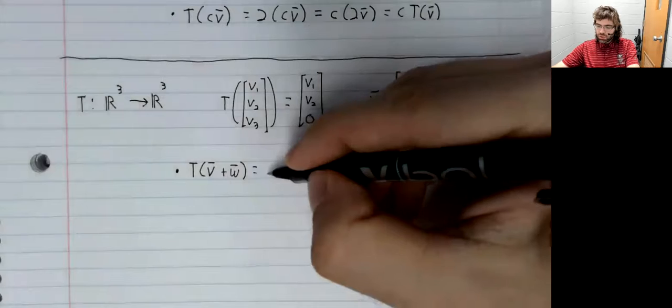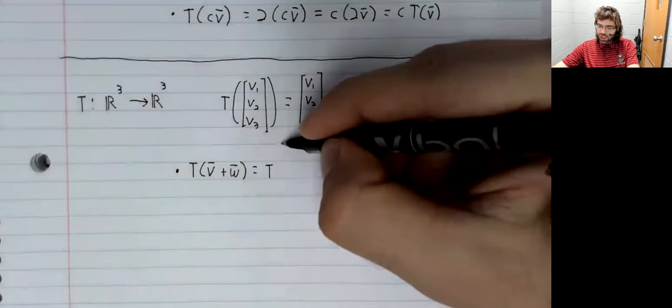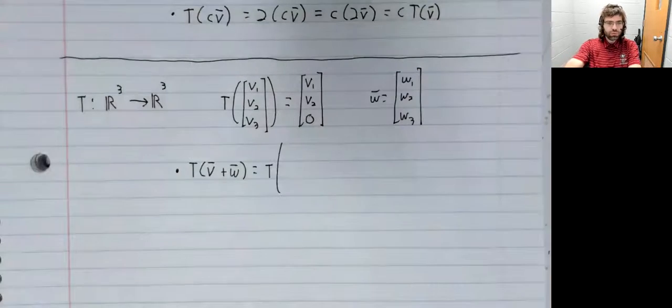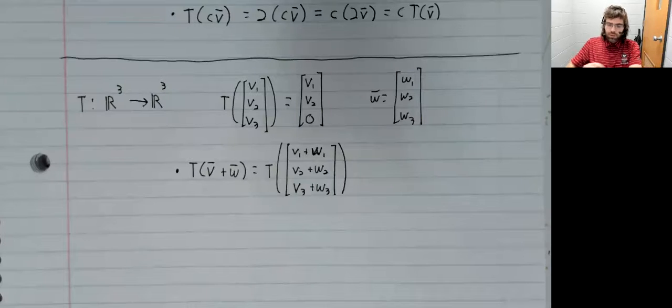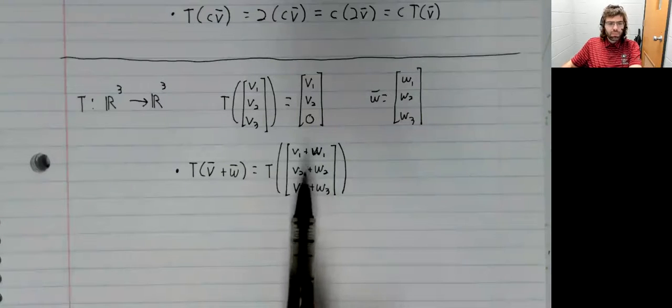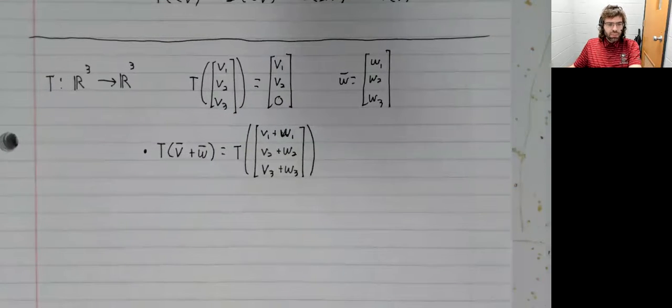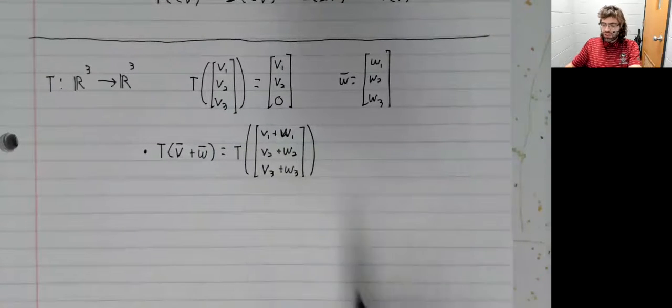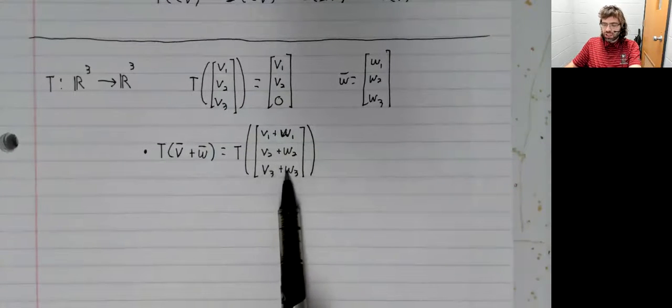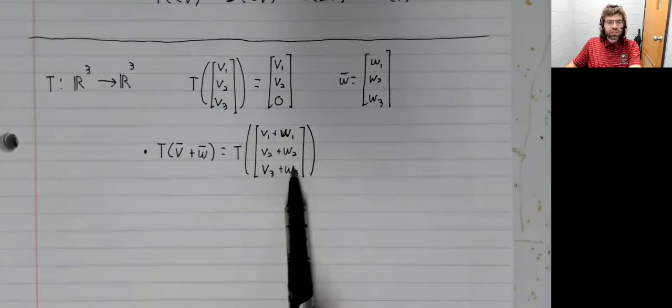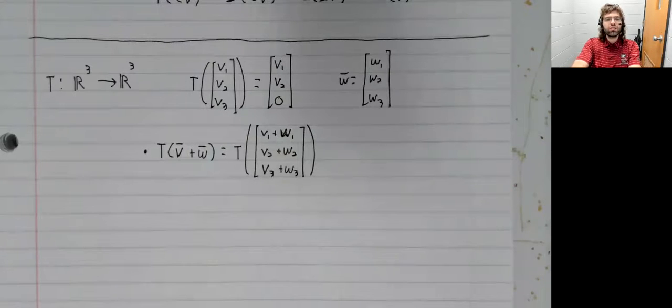So T of v plus w. Well, here's the sum v plus w. By definition, this transformation is going to take this third element and turn it to zero.